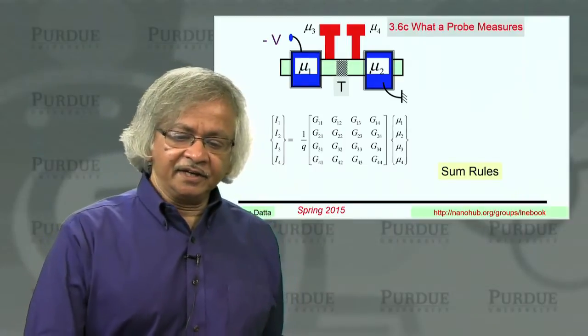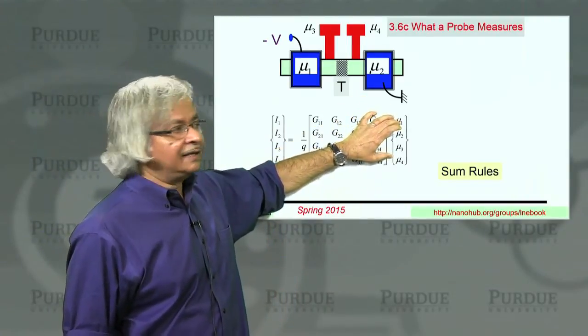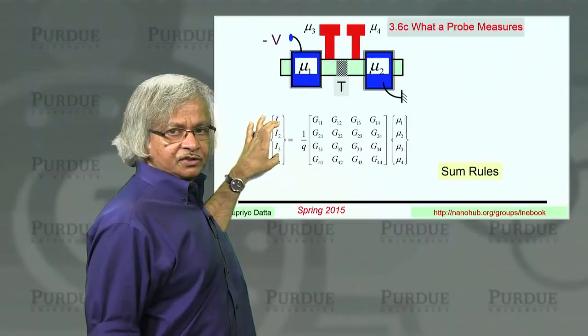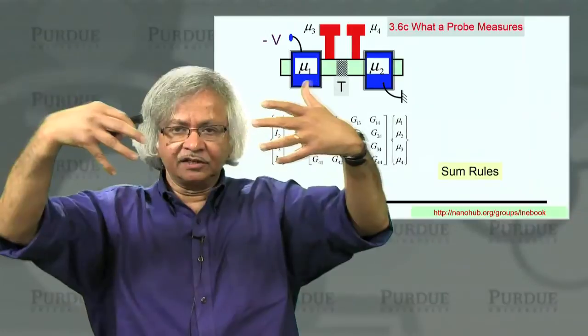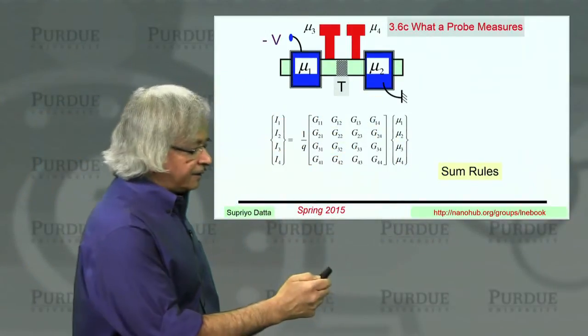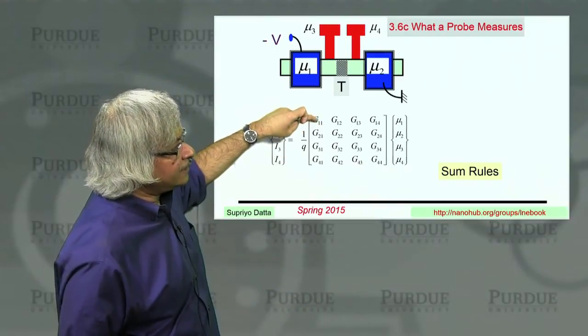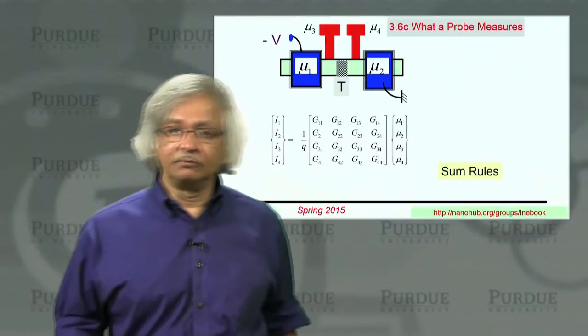Now another constraint is that no matter what potential I put, the currents must all add up to 0. That's Kirchhoff's Law. You see, if you have this node where all these currents are coming in, total must be 0 at steady state. And that requires that each column must add up to 0. So those are the two important sum rules.